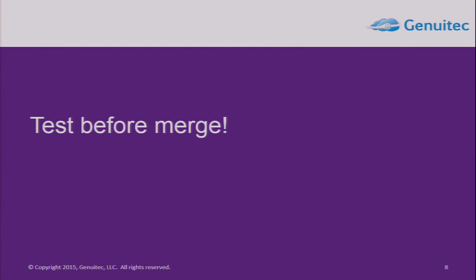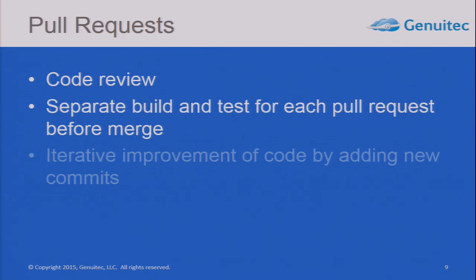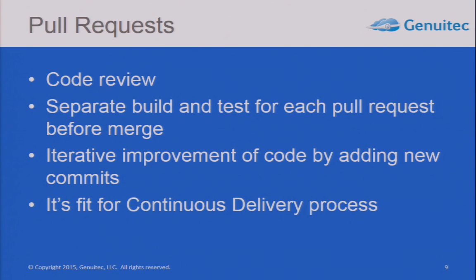The important thing is you have to test before merging with the stable release branch. That's where you have the GitHub approach with pull requests — you do a code review for your pull request, you have a separate build for each pull request, you can test it, and you can iteratively improve it. So you can do continuous delivery with pull requests.